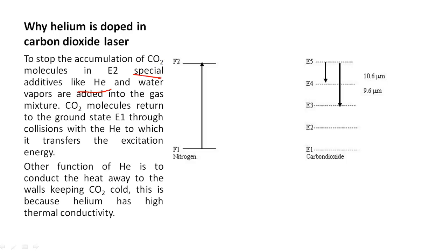CO2 molecules return to the ground state E1 through collisions with helium, to which it transfers the excitation energy. Another function of helium is to conduct heat away to the walls, keeping CO2 cold. This is because helium has high thermal conductivity.